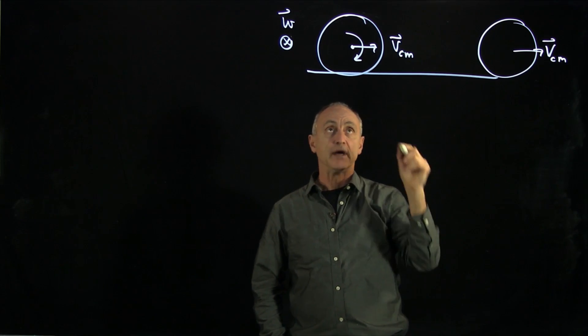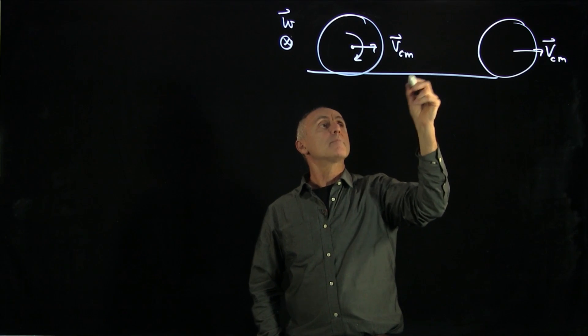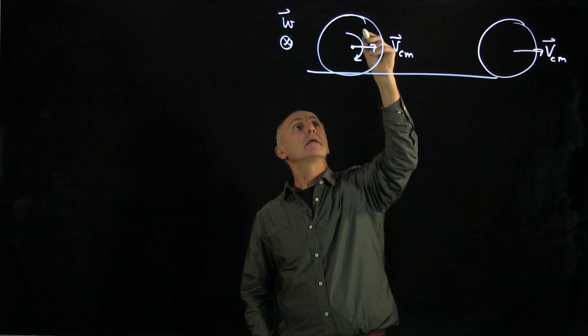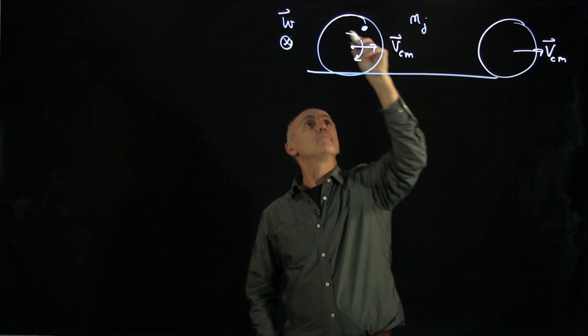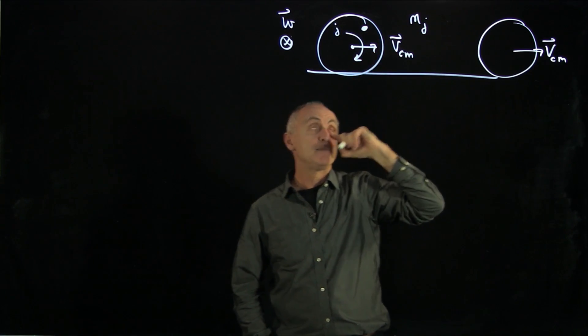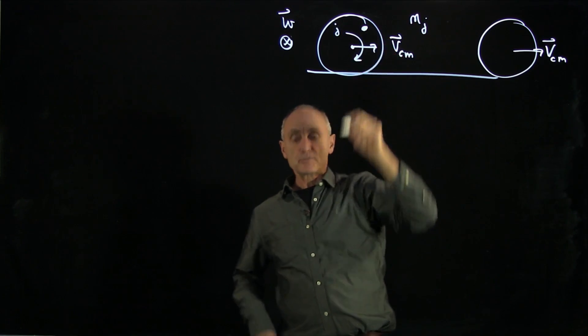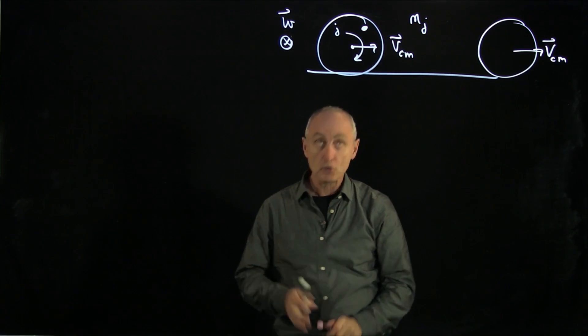So how do we describe that? Well, we'll do that by choosing some point in the body. So let's pick a point. We'll call that mj with mass mj. And the velocity of this point, remember, has two components.